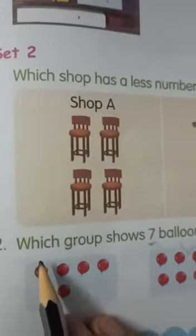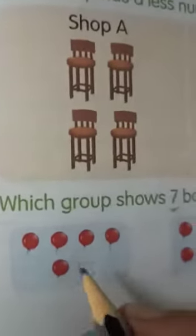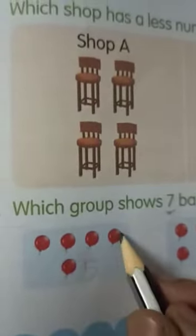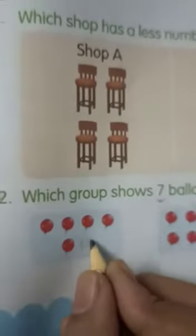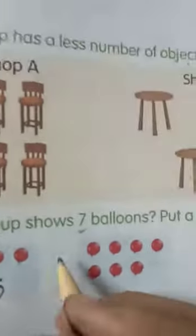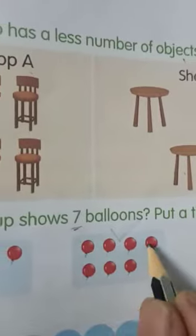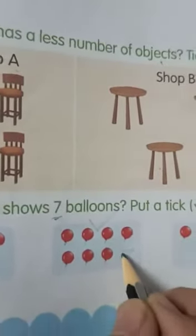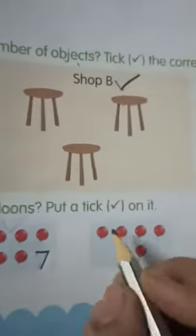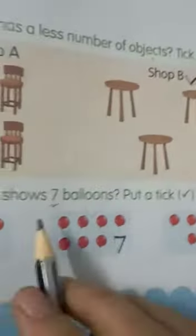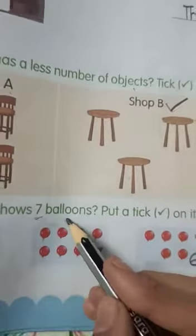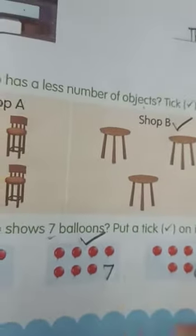The second question is, which group shows 7 balloons? Put tick mark on it. Let's count and write first. 1, 2, 3, 4, 5. So, there are 5 balloons. And the next, 1, 2, 3, 4, 5, 6, 7. There are 7 balloons. 1, 2, 3, 4, 5, 6. We have to put tick mark on 7 balloons. So, put a tick on 7 balloons.